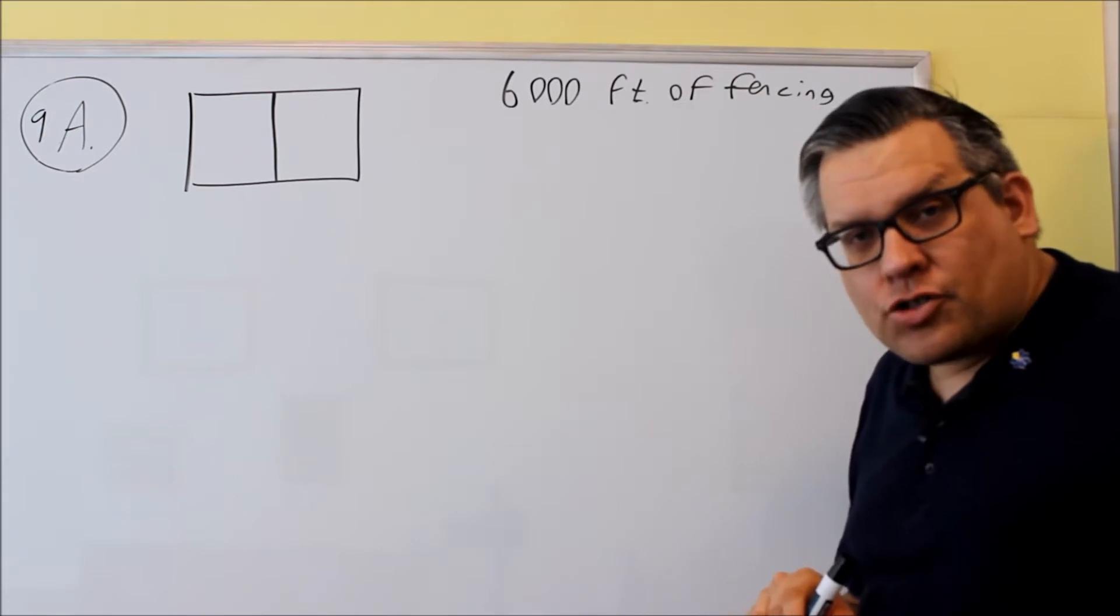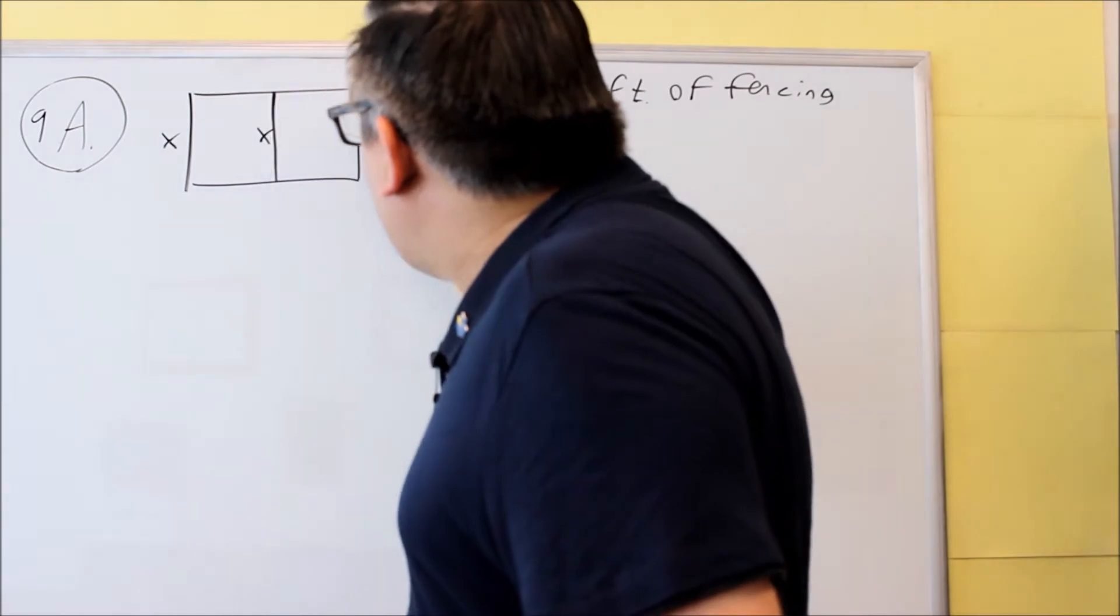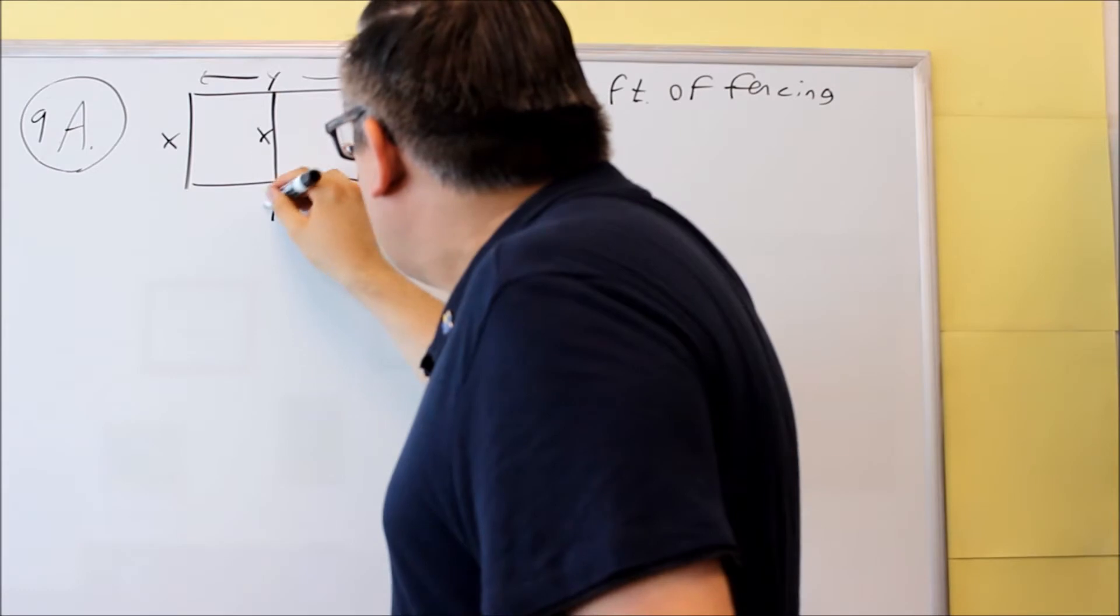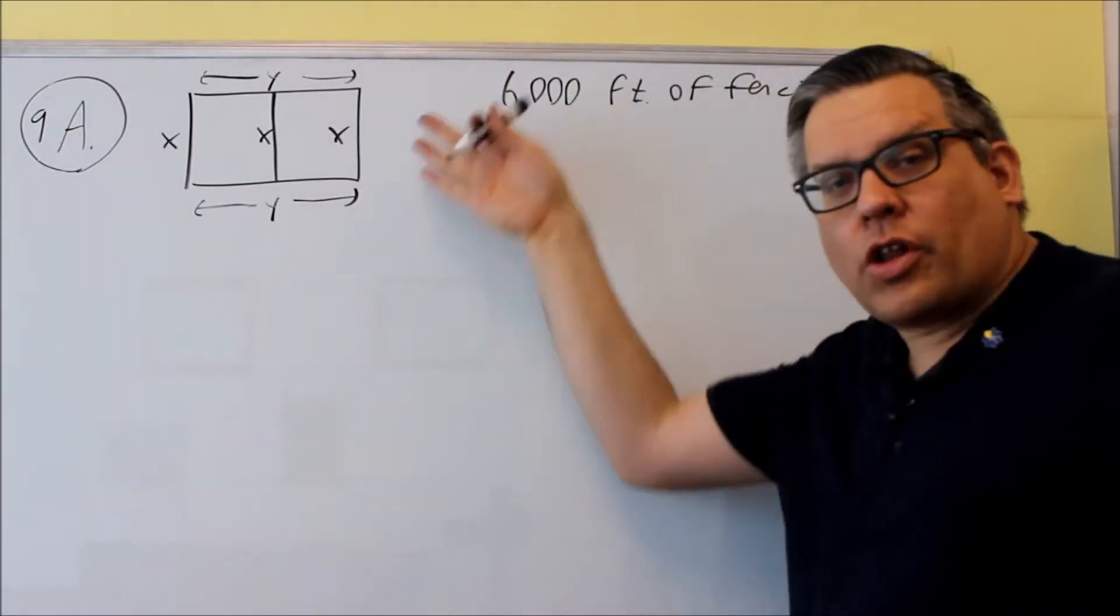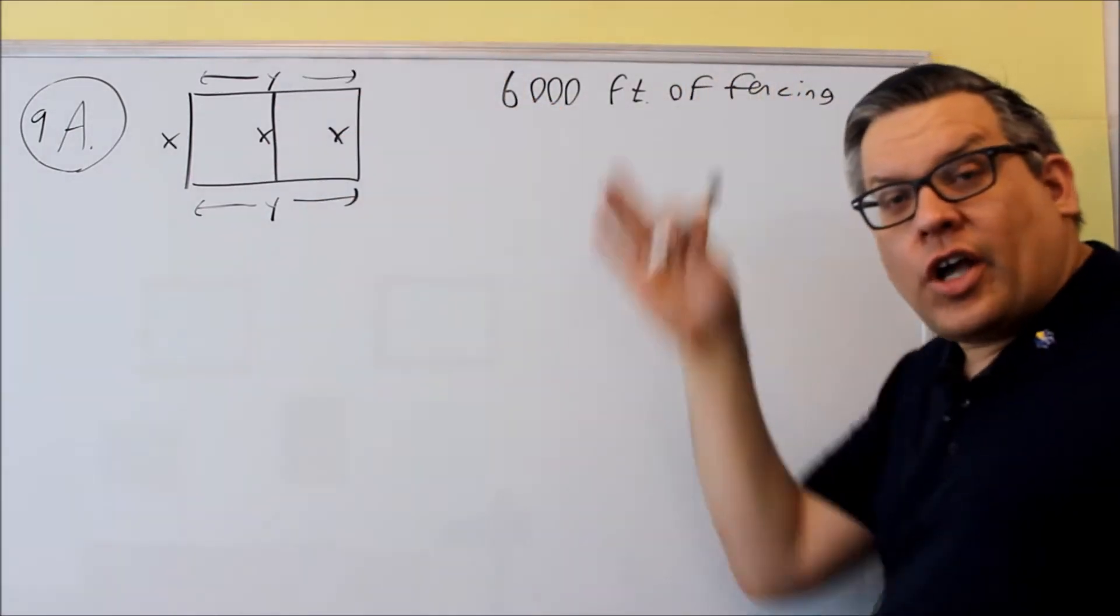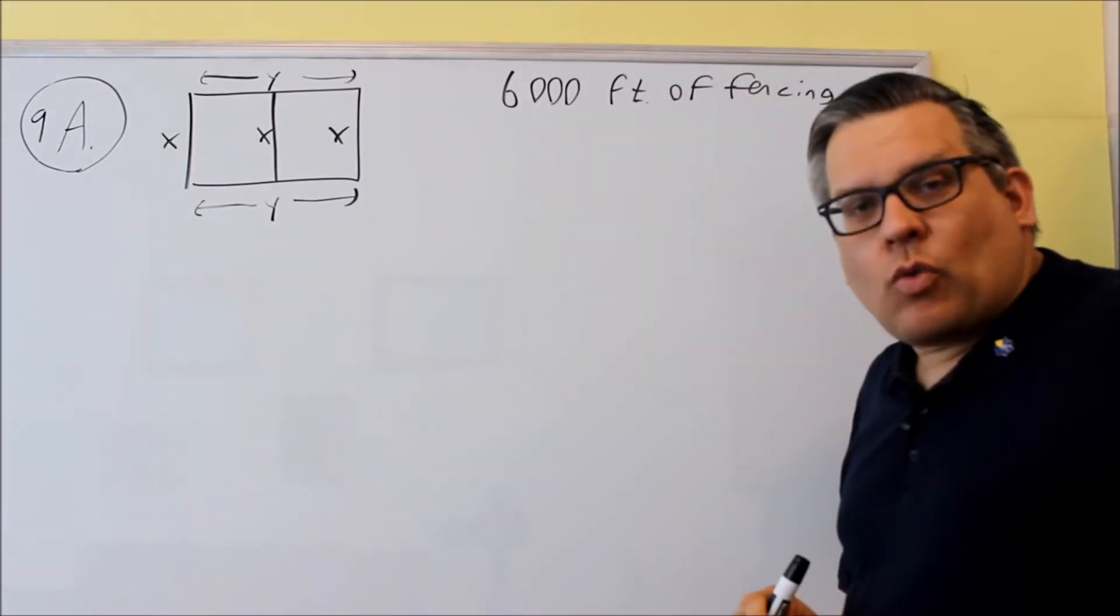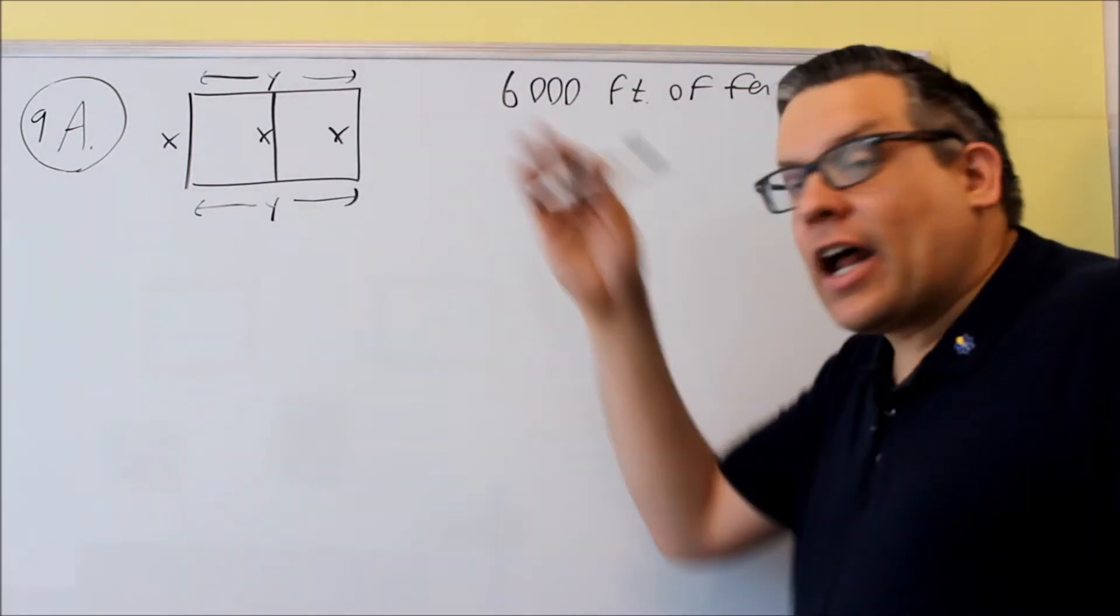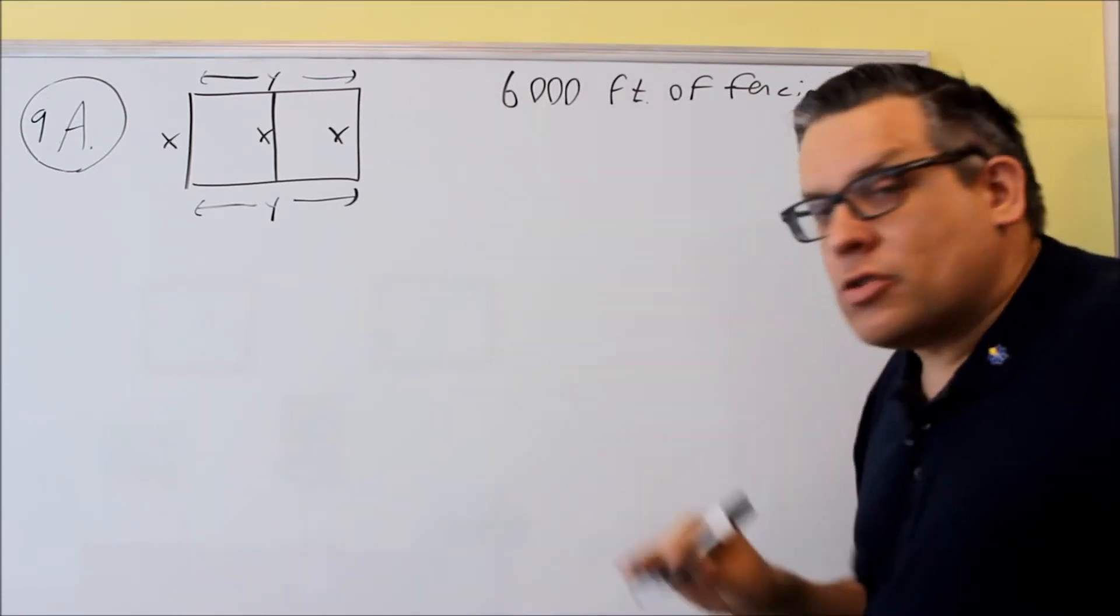First thing we're going to do is label our picture because that's going to help us know what the formulas are going to be. The short distances I'm going to call x, and the longer distances here I'm going to call y. You could switch this around if you want, but I'm going to use x's and y's because our formula for vertex has x's and y's in it. Sometimes people get confused if you change it over.